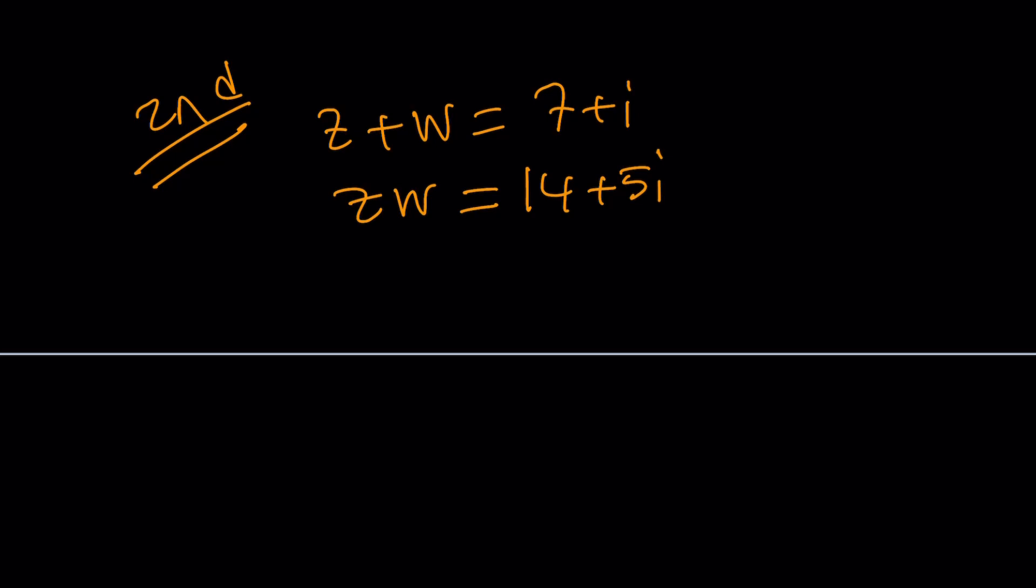Basically, if you are trying to write a quadratic equation whose roots are Z sub 1 and Z sub 2, that can be written as X squared minus Z sub 1 plus Z sub 2 times X plus Z sub 1 times Z sub 2 equals 0. And this is from Vietta's formulas. Remember, we just talked about Vietta's formulas. I think it was two days ago.